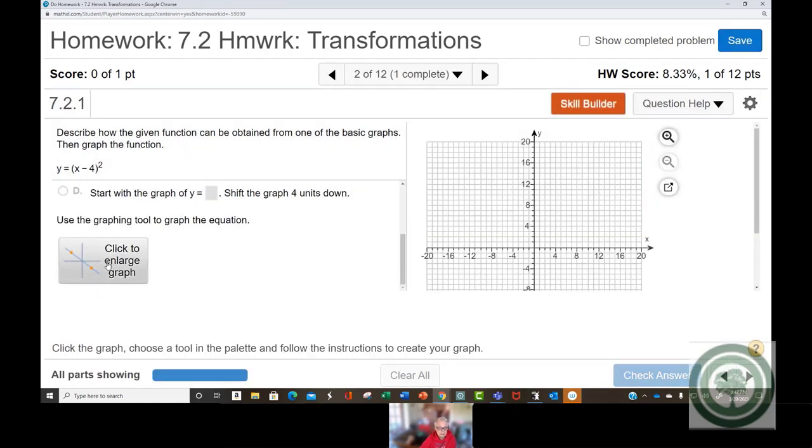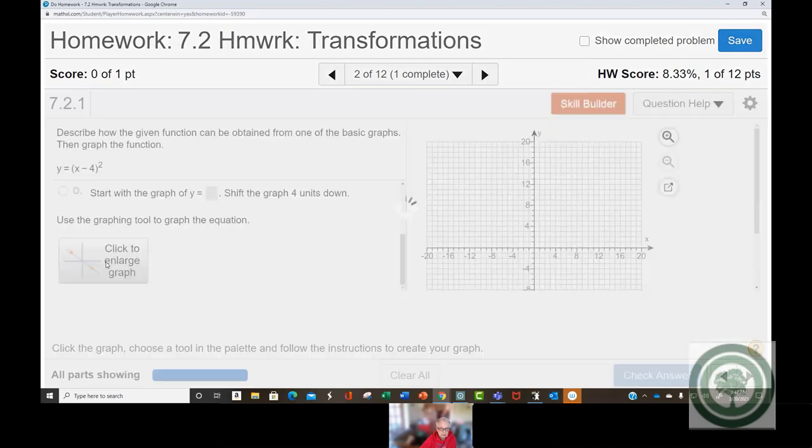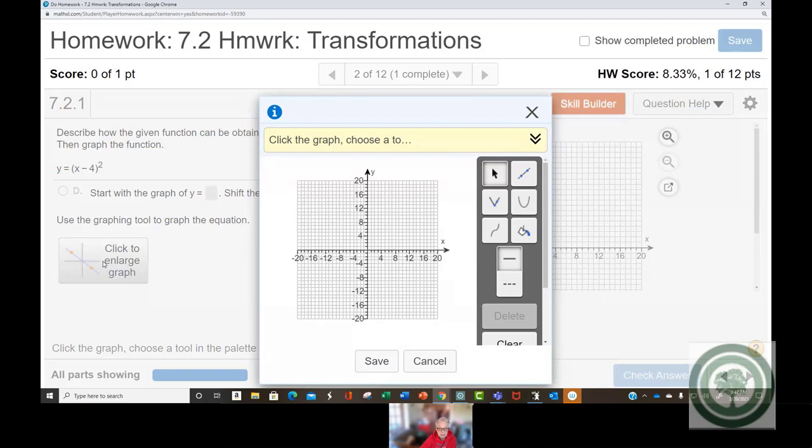Now, we're going to graph this. Oh, that is so small. All right, well, let's just deal with it. This is x squared. It's not square root. It's x squared. And it's going to be a parabola like this.